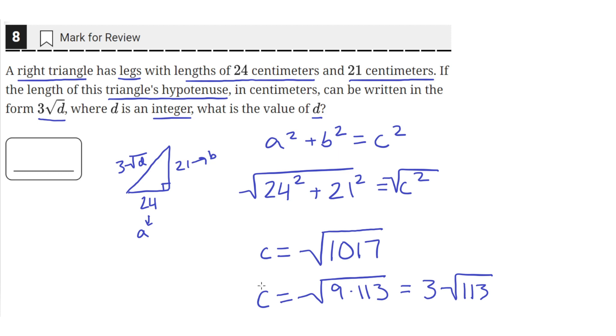So now we've written c, which was the hypotenuse of the triangle, in the form of 3 times the square root of something. And the problem tells us that something in the square root is equal to d. So the value of d is equal to 113. So 113 is the answer.